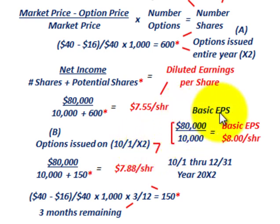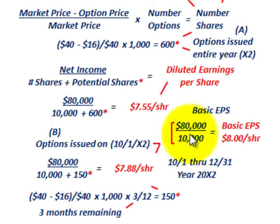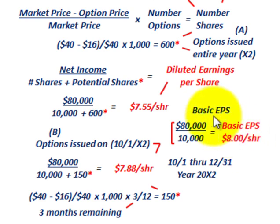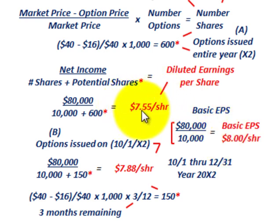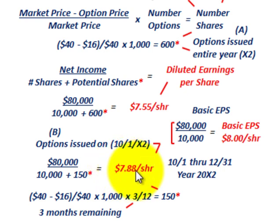Comparing to basic earnings per share: net income of $80,000 divided by 10,000 shares of common stock outstanding — without including any options or potential shares — gives basic EPS of $8.00 per share. Diluted EPS is less than basic EPS. For options outstanding the entire year it was $7.55, versus $7.88 for the partial year.